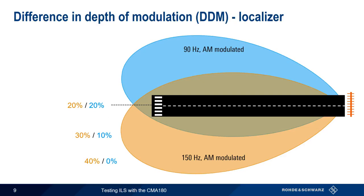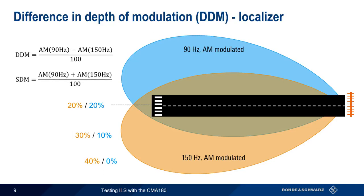The localizer determines position deviation from the centerline by using the difference in the depth of modulation between these two lobes. Mathematically, the difference in depth of modulation is the measured 90 Hz AM modulation depth minus the measured 150 Hz AM modulation depth, divided by 100. Related to DDM is something called SDM, or sum of depth of modulation, which is the sum of the modulation depth of each lobe, again divided by 100.